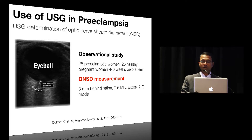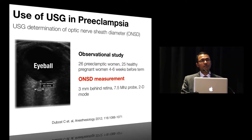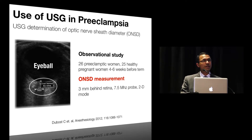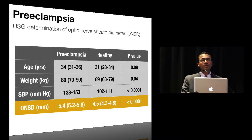In this observational study from France, the authors recruited about 26 preeclamptic and 25 normal term women about four to six weeks prior to delivery, and subjected them to ultrasound evaluation of the optic nerve sheath diameter on admission for labor. Using a standardized methodology, they measured optic nerve sheath diameter at a point about three millimeters behind the retina with the patient in a 30-degree recline. The median optic nerve sheath diameter was significantly higher in preeclamptic women compared to the normal term group.